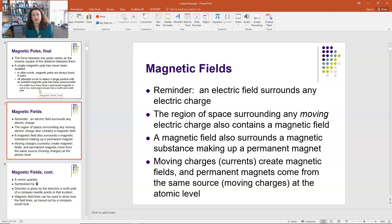Okay, so let's remember. An electric field surrounds any electric charge. But magnetic fields aren't generated around just any old electric charge. In fact, the region of space surrounding moving electric charges contains a magnetic field, okay? So a magnetic field also surrounds a magnetic substance making up a permanent magnet. But if you want to create magnetic fields, you've got to either have permanent magnets or currents, which are moving charged particles.